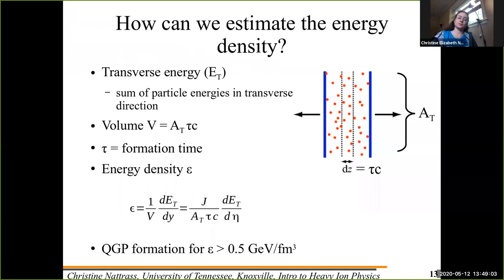Then you take the energy, divide it by the volume, and it gets you an energy density. And then we think that the energy densities that you have to get are at least half a GeV per Fermi-cubed to form a quark gluon plasma.